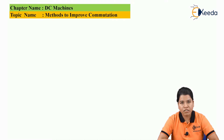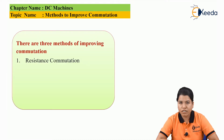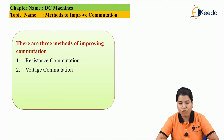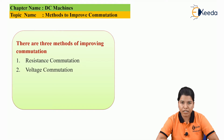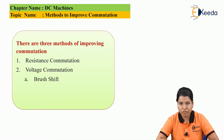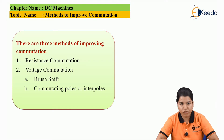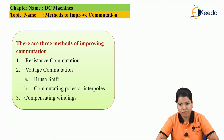The various methods to improve the commutation are: first, resistance commutation; second, voltage commutation — which is divided into two parts: brush shift and commutation poles or interpoles; and the third method is by using compensating windings.